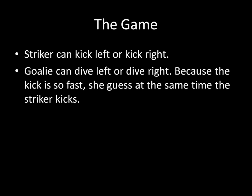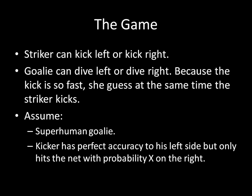We're going to make some assumptions here to better facilitate our results. We're going to assume we have a superhuman goalie. If the goalie guesses correctly — if the striker is kicking left and she dives left — she'll always stop the ball. Likewise, if the striker is kicking right and she's diving right, she will always stop the ball. The kicker, on the other hand, is imperfect. He has perfect accuracy to his left side, so if he kicks to the left and the goalie dives to the right, he will score a goal successfully, always. But the kicker is only going to be able to hit the net with probability x on the right — sometimes he just misses. So with probability 1 minus x, he will completely whiff at the goal and not score even if the goalie guesses incorrectly.